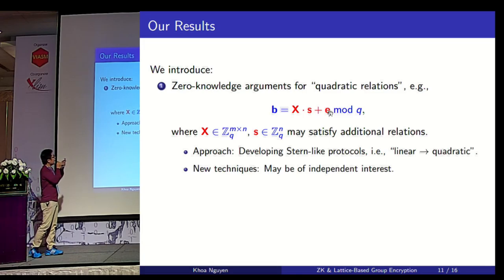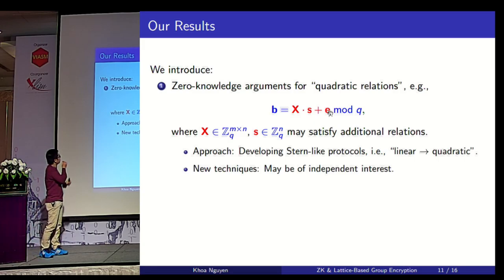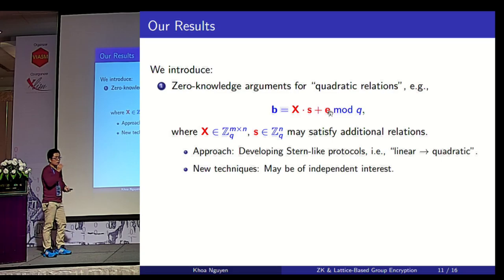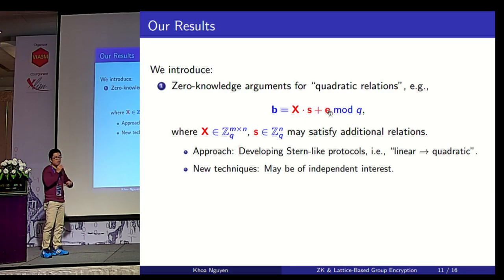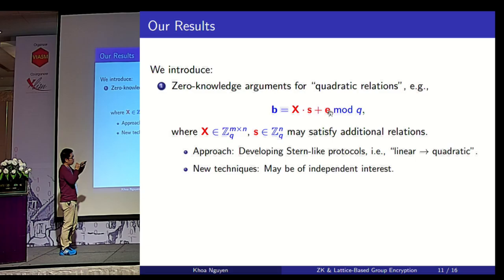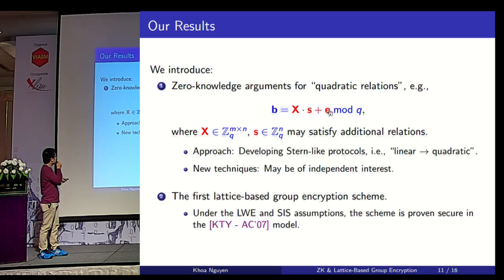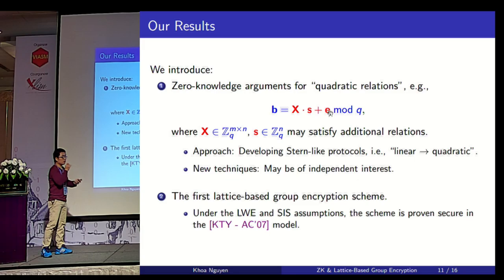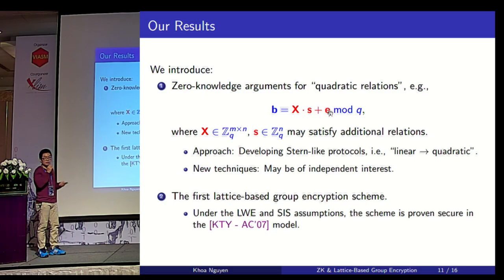In this work, we introduce a zero-knowledge argument for quadratic relations, including the relation I described where matrix X and vector S may satisfy some additional relations. Our approach is to develop a Stern-like protocol and improve its capability from handling only linear to handling quadratic relations. In the process, we propose new techniques that may be of independent interest. Once this most difficult part is realized, we use it to build the first lattice-based group encryption scheme. The scheme is proven secure in the KTY model under the SIS and LWE assumptions.